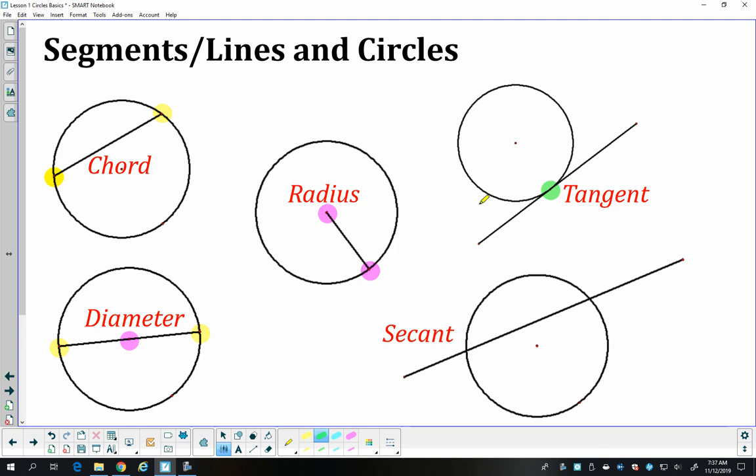And a secant segment is a segment that sort of slices through a circle and touches it twice. In fact, part of a secant segment is a chord, but that segment also exists outside of the circle like this one does. So it starts from the outside, goes through the circle, hits it twice, and then it goes back outside.